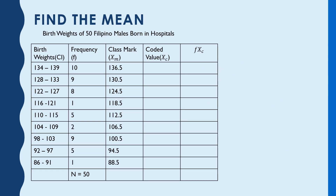So this time we have 9 class intervals — 1, 2, 3, 4, 5, 6, 7, 8, 9 — still using the birth weights of 50 male Filipinos born in a hospital. Since there are 9 intervals, the 5th one is in the middle. So our coded values are: 0 at the 5th, then 1, 2, 3, 4 going up, and negative 1, negative 2, negative 3, negative 4 going down.